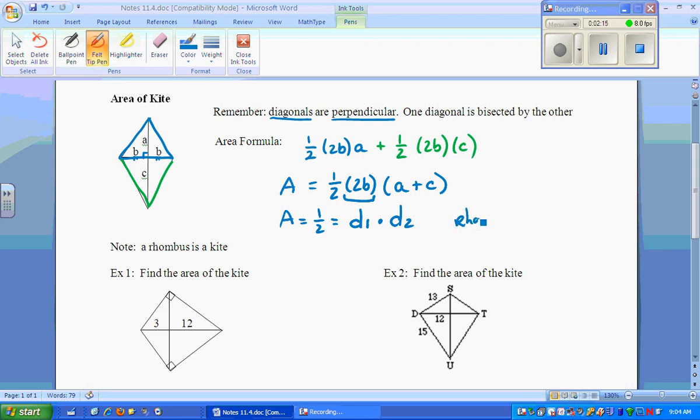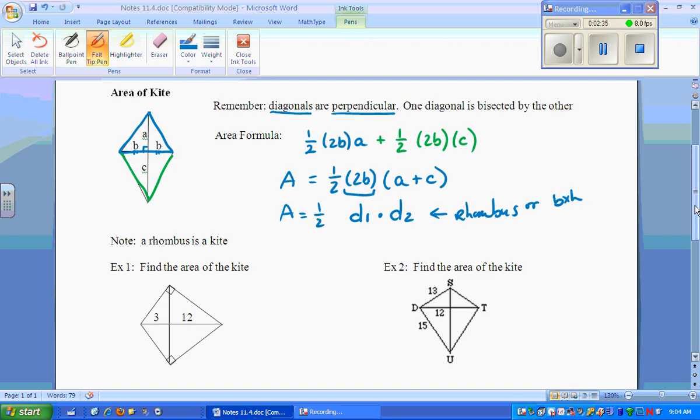The other figure is the rhombus. The rhombus also has the area formula 1 half diagonal 1 times diagonal 2, or the rhombus has base times height, which we learned from unit 11-1. Questions? No? Let's proceed on.